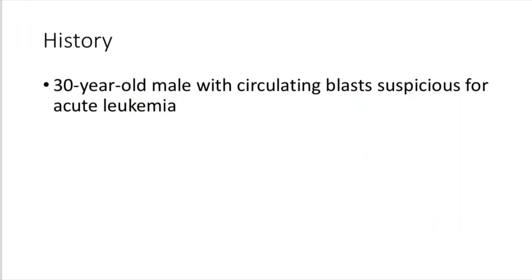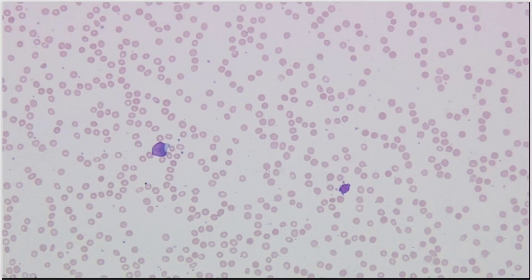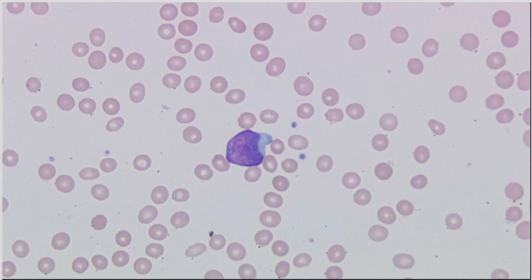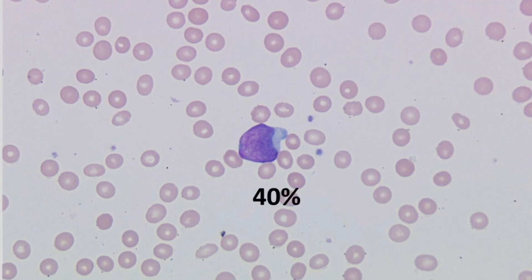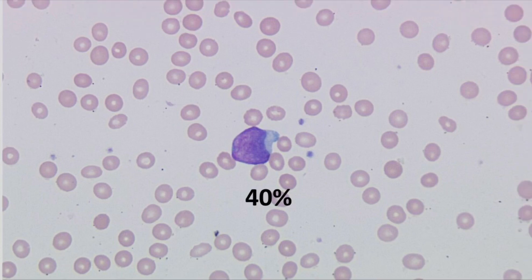The history on this case was a 30-year-old male that had circulating blasts in his peripheral blood, called suspicious for acute leukemia. On the peripheral blood smear at low power, we see very few white blood cells scattered about. They have a relatively high nuclear-to-cytoplasmic ratio, relatively smooth chromatin, and a couple of small nucleoli — so this looks like some type of blast. These made up 40% of the total white cells in the peripheral blood, indicating an acute leukemia of some sort.